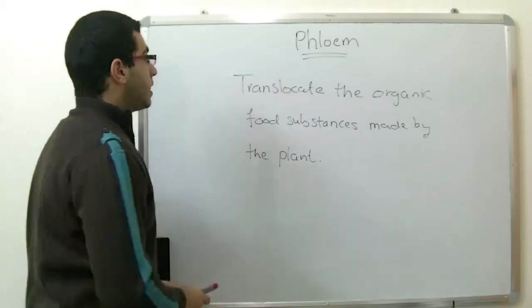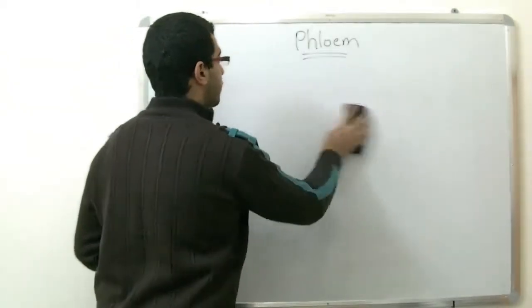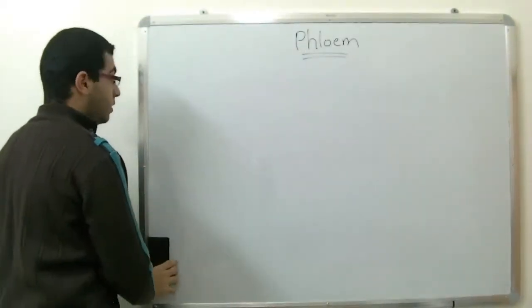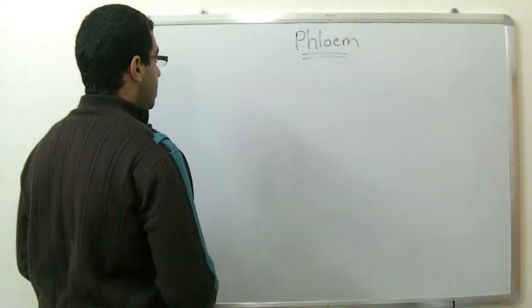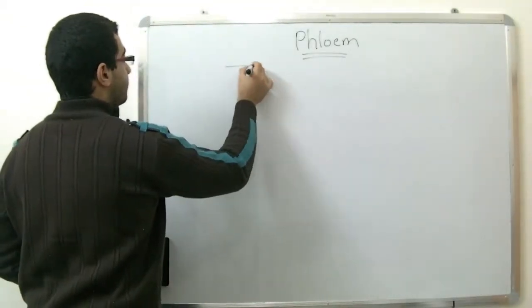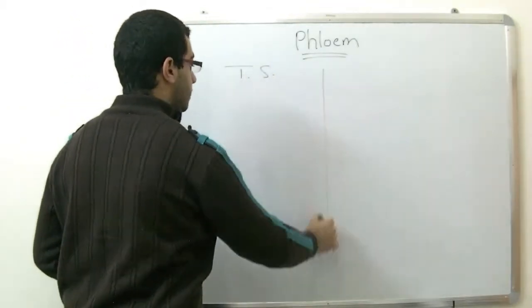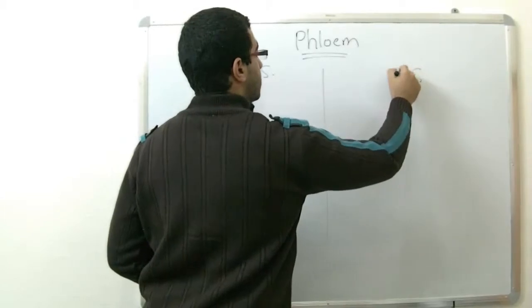Then what does the phloem consist of? We will draw both transversal sections and longitudinal sections for the phloem tissue to show this. This is the transversal section. This is the longitudinal section.